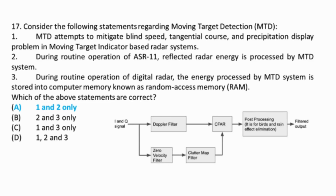In a moving target detection system, the reflected energy from radar signals is processed and stored in what is referred to as a range bin or range cell — a storage unit corresponding to a specific range or distance from the radar antenna. The radar system divides the entire range of distances into discrete bins or cells, and the reflected energy from each target is allocated to the corresponding range bin. Statement 3 states that the energy is stored there — this is incorrect; it is fed to various filters including Doppler filter, zero velocity filter, constant false alarm rate filter, and clutter map subtraction filter. After post-processing, information about moving targets such as their positions, speeds, and other relevant details is continuously updated and stored in RAM, enabling real-time processing and quick retrieval for display on the radar screen.